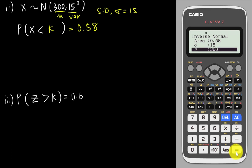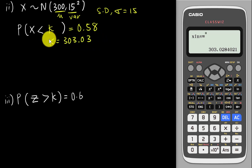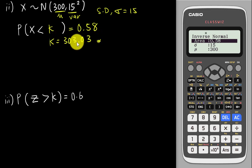I type equal and I can easily find my k value: 303.03. This is how I get the X value by changing the standard deviation and mean. If you want to verify whether this answer is correct, there is another way to check.